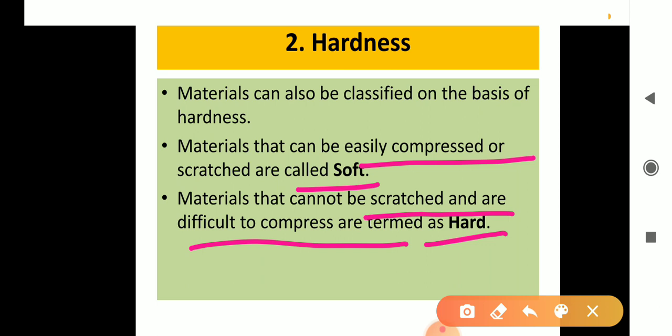Let us do a simple activity to evaluate the hardness of some different solid substances. Take cotton, cheese, paneer, sponge, and a stone. Now press each one. If you can press it easily, it is a soft material; if you cannot press it, it is called a hard material.